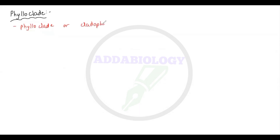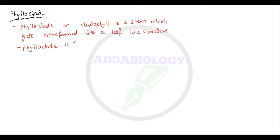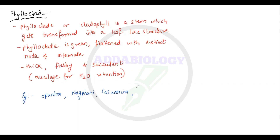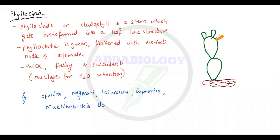The next modification is the phylloclade, also called cladophyll. It is a stem that gets transformed into a leaf-like structure. Since the actual leaf becomes very small, the stem starts performing photosynthesis. A phylloclade is a green, flattened stem with distinct nodes and internodes — thick, fleshy, and succulent, meaning it stores water to survive harsh conditions. Examples include Opuntia (cactus), Casuarina, Euphorbia, and Muhlenbeckia.